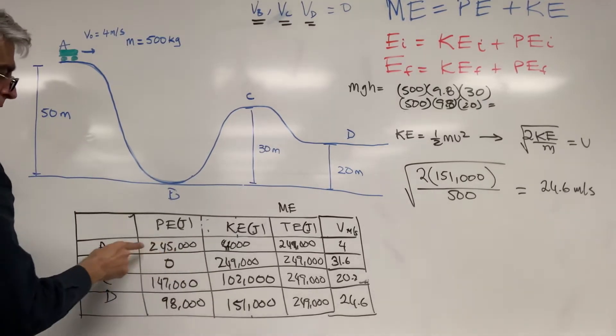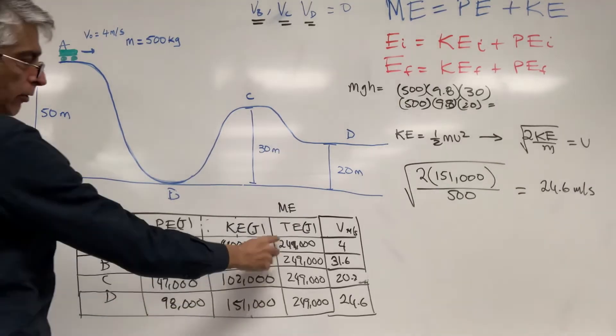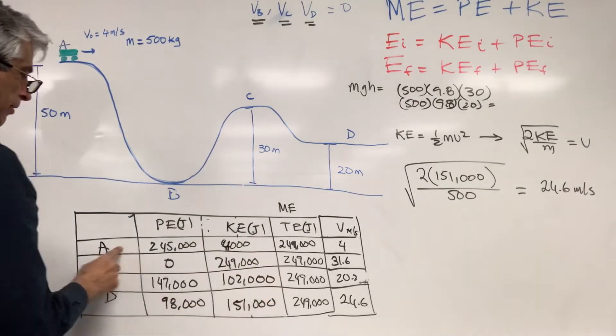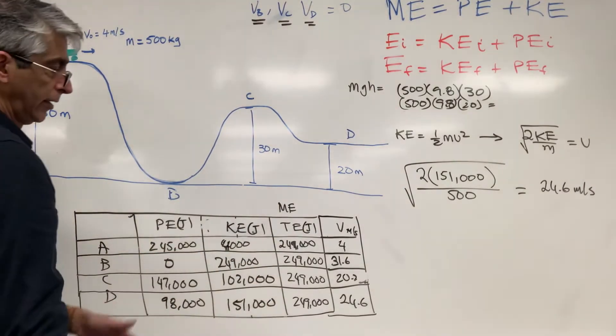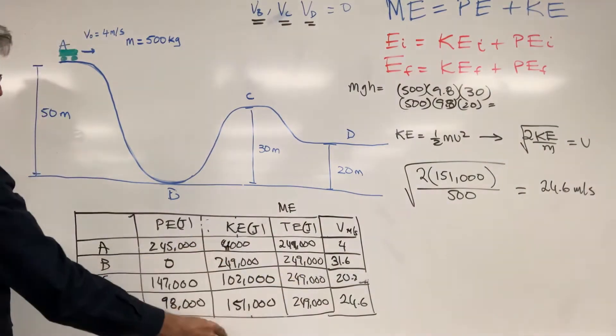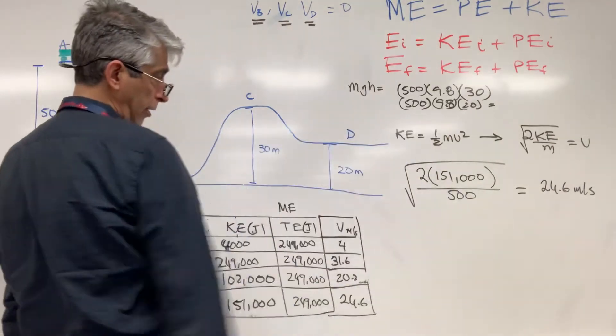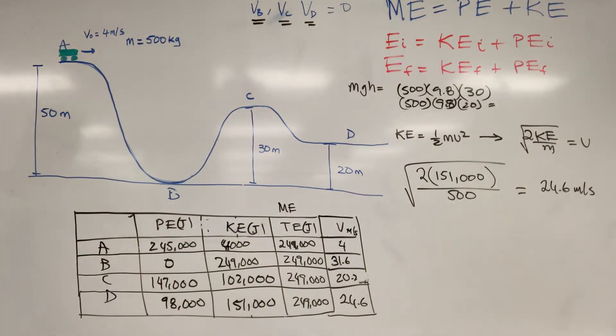It was easy to find potential energy because we always know the height, and the total energy remains constant. We found that from the first part, and subtracting that because these two must equal that. We figured out kinetic energies, and then using the kinetic energy, we figured out how to find what the velocity is.